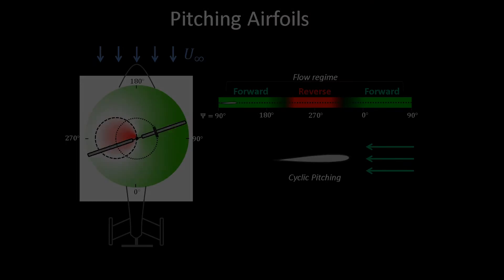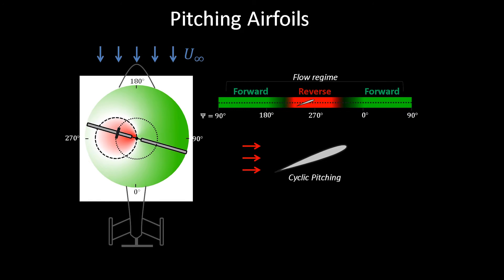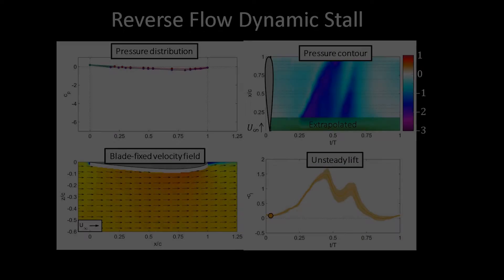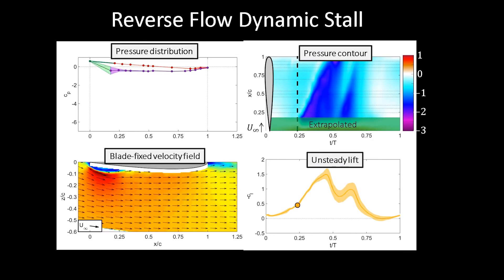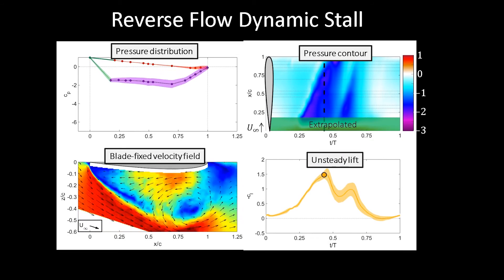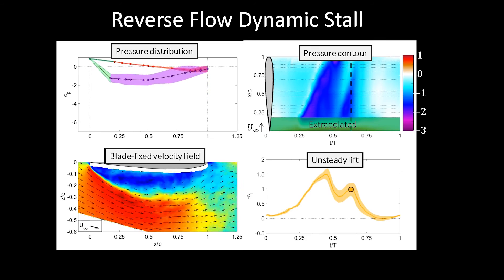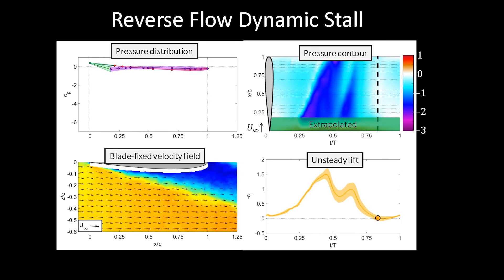Another thing that I'm doing is looking at airfoils that pitch, because as a rotor blade goes around the rotor azimuth, it pitches. This creates a unique set of challenges, especially in the reverse flow region, where we can see reverse flow dynamic stall. That's one of the things that I've been working on characterizing and ultimately modeling to help improve the development of high-speed helicopters.